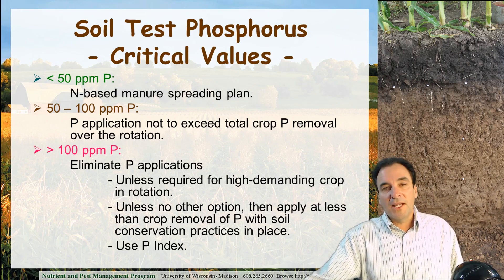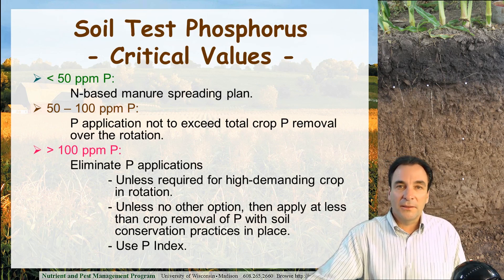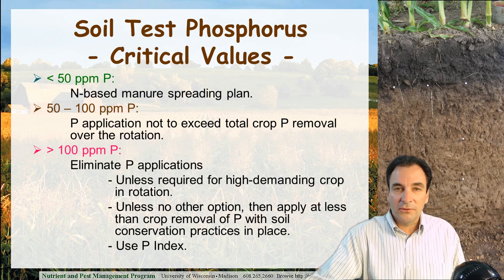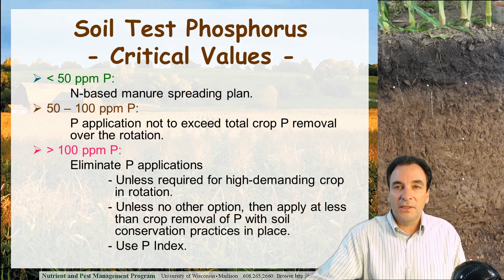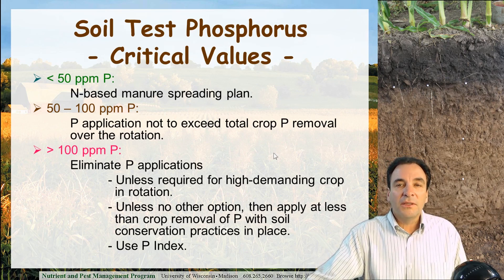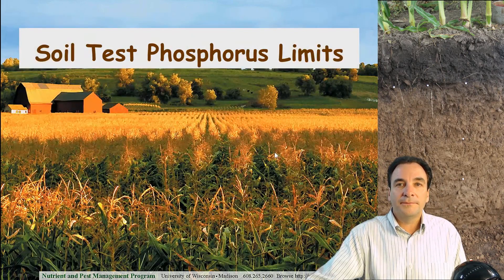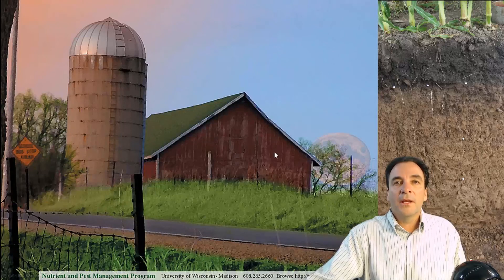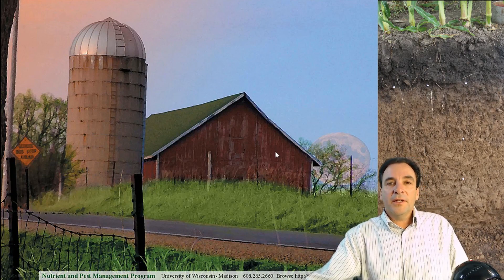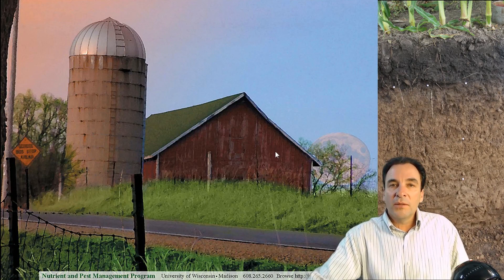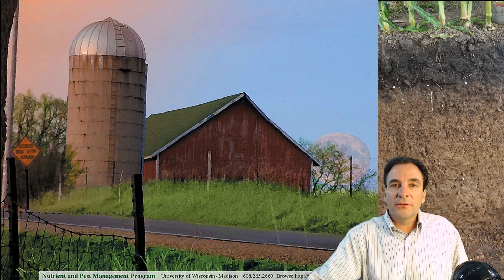There is a third option, which we'll talk about later — the phosphorus index model. It's a landscape model that looks at the potential for phosphorus to leave a field. If that value is relatively low, you can apply manure on these higher soil-testing fields. We'll take a break here and come back with one more discussion of soil test phosphorus.